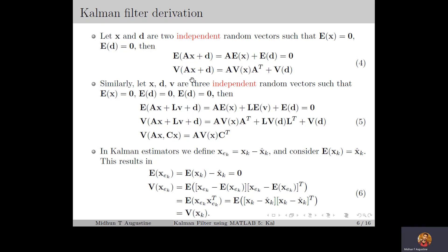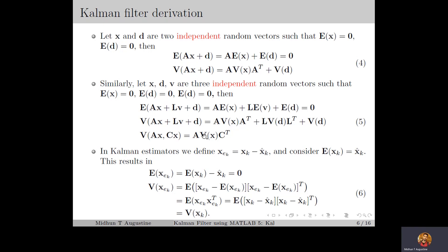This can be extended for cases with more random vectors. For example, let x, d, and v be three independent random vectors with expectation 0. Then expectation of Ax + Lv + d will be 0, since E[x], E[v], and E[d] are 0. Similarly, variance of Ax + Lv + d equals A·V(x)·A^T plus L·V(d)·L^T plus V(d). And the cross-variance of Ax and Cx equals A·V(x)·C^T. In the Kalman filter derivation, we will be using these results.